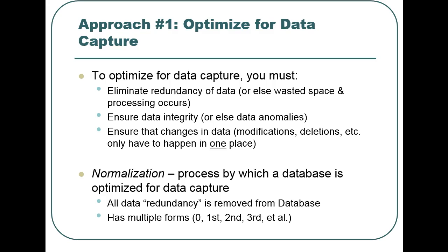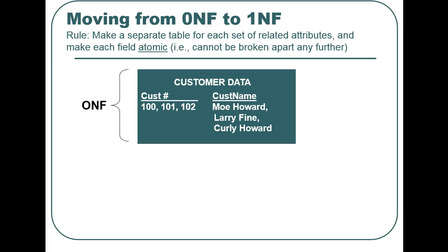Normalization has many levels or forms. The rule for moving to first normal form is very simple: data must be arranged in a tabular format. Also, each field in the data should be atomic — that is, the data cannot be broken down any further.